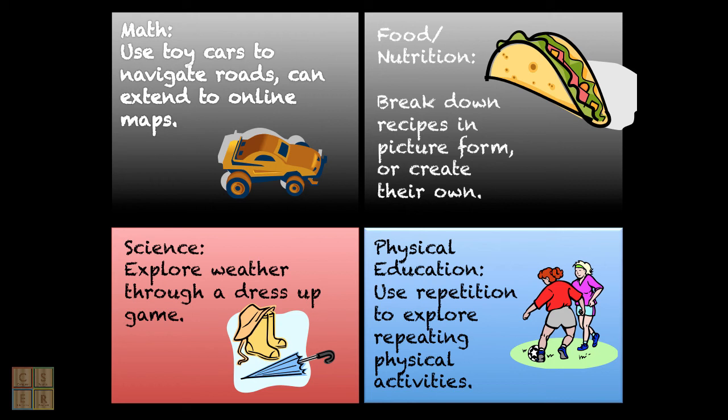We will end this lesson by exploring some possible activities with strong connections with other knowledge areas. In mathematics, one example could be to explore pathways and simple graphs by working out the shortest way to get from one point to another. This could be done by constructing a town with roads and then working out how to maneuver toy cars through the roads from one point to another. Algorithms could be explored through either the construction of the town — how do you build a road, how are the roads connected — or in the directions that the car has to take through the town. This could also be extended to include discussions about GPS technology and online maps.